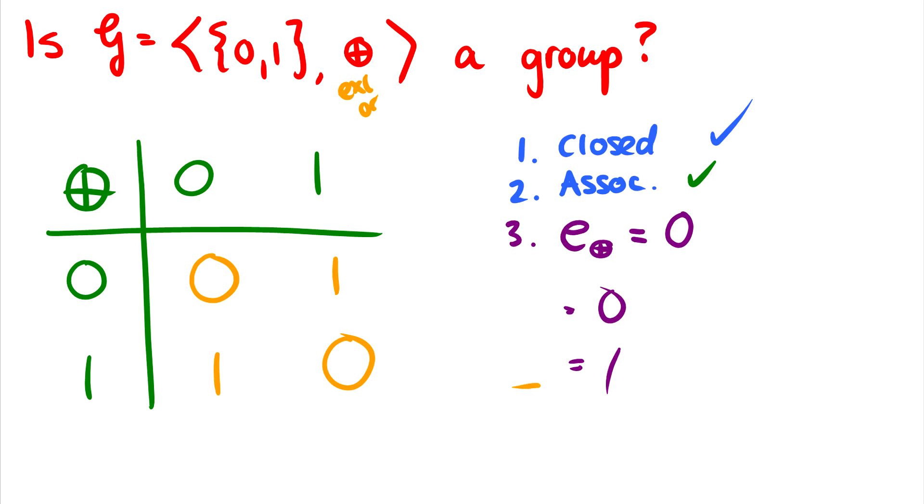Okay, what about inverses? Let's ask ourselves if there are inverses for this. So what is the inverse of 0? And what is the inverse of 1? So what gives us back to 0? Well, if we have the same value, we get 0 back. So the inverse is just itself. So it satisfies all four axioms. Therefore, yes, it is a group.